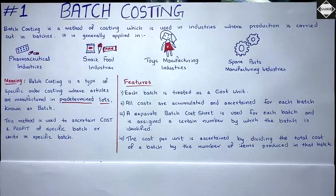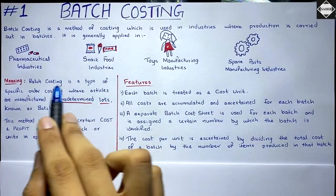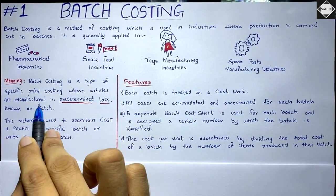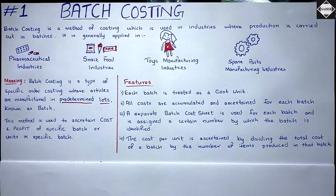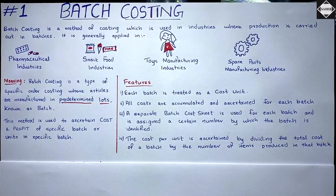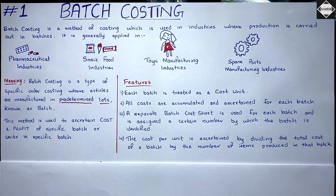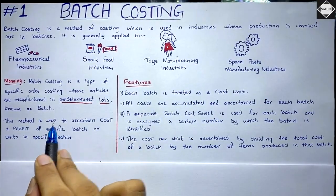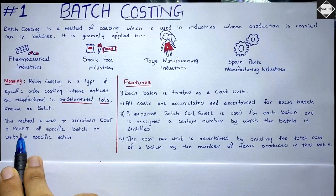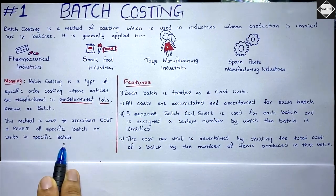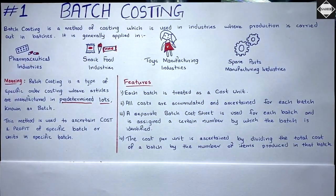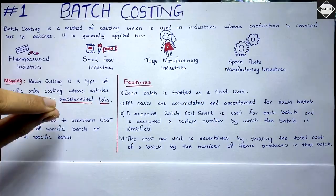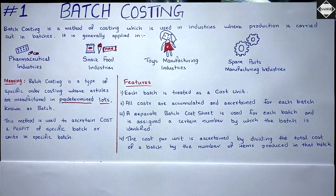Batch costing is a type of specific order costing where articles are manufactured in pre-determined lots. The company has to decide beforehand how much they are going to produce in one batch — that's why it's called pre-determined lots. This method is used to ascertain the cost and profit of a specific batch, and from the cost we add a profit percentage to get the selling price.